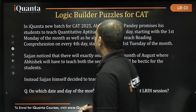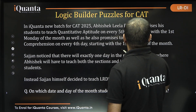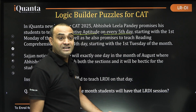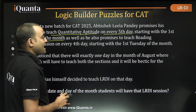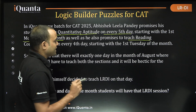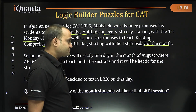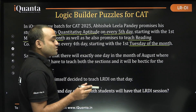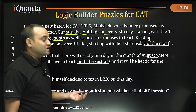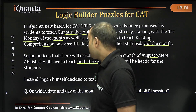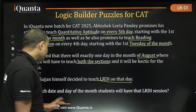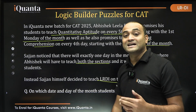In iQuanta's new batch for CAT 2025, Avisek Leela Pandey promises his students to teach quantitative aptitude on every fifth day starting with the first Monday of the month, as well as to teach reading comprehension on every fourth day starting with the first Tuesday of the month. Sajjan noticed there will be exactly one day in August where Avisek will have to teach both sections, so Sajjan decided to teach LRDI on that day. The question is: on which date and day of the month will students have that LRDI session?